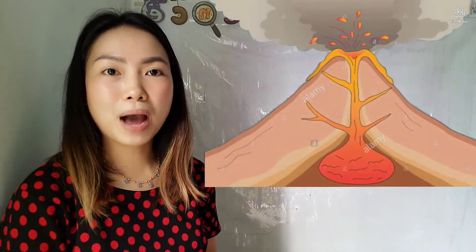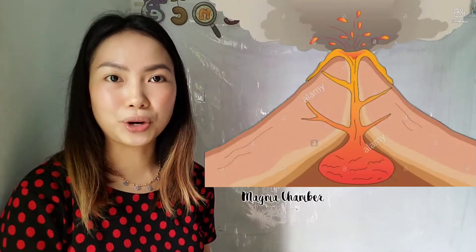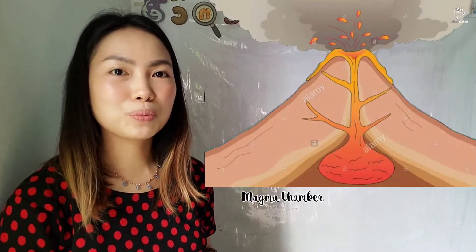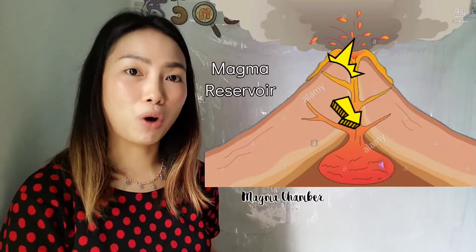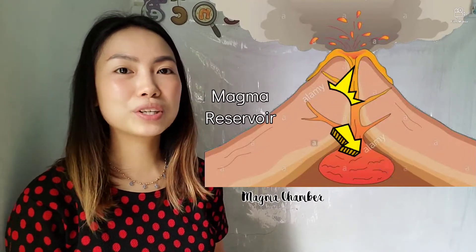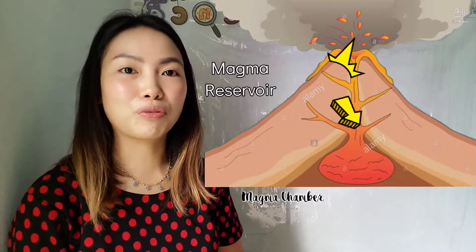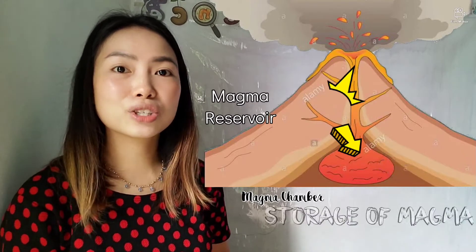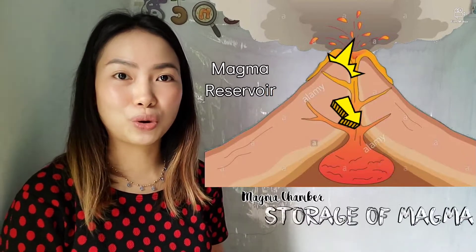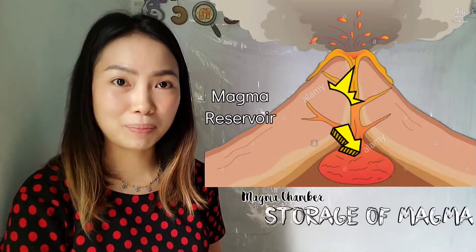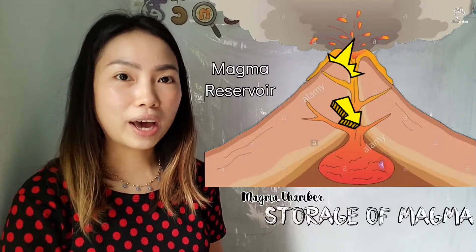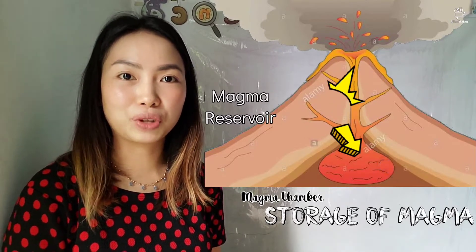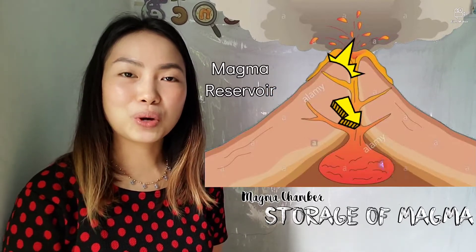Let's start with the magma chamber. Magma chamber may also be called as magma reservoir. From the word itself — reservoir — it is the storage of magma while it is not being used by the volcano.